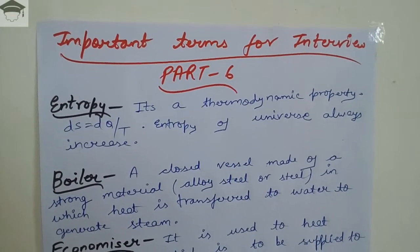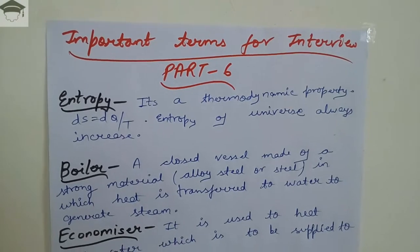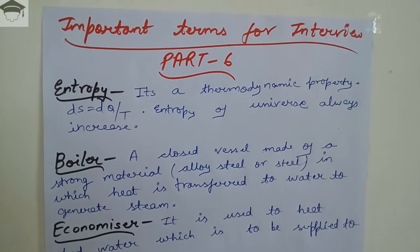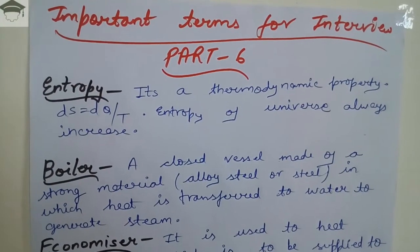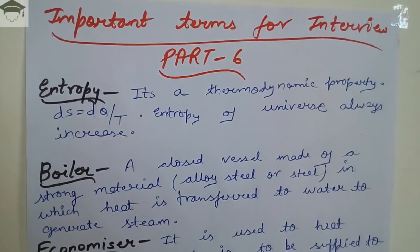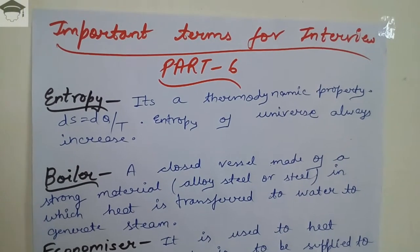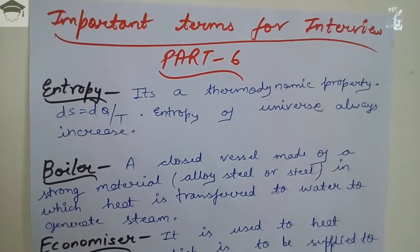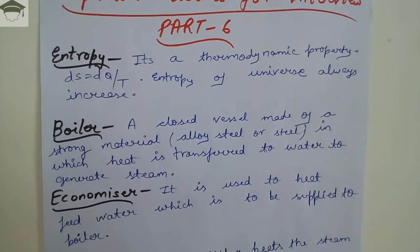The first term is entropy. It is a thermodynamic property given by ds = dq/T, where ds is the change in entropy, dq is the change in heat, and T is the absolute temperature. The entropy of the universe always increases.